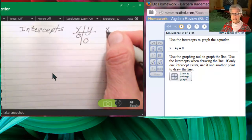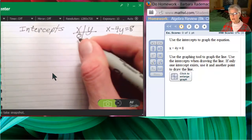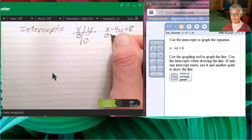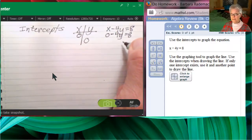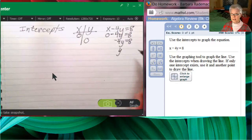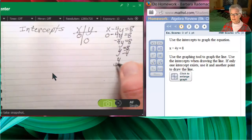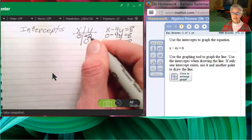That way, if x is 0, we find out what y is, and if y is 0, we find out what x is. So let's let x equals 0. All right, that will leave us with negative 4y equals 8. Divide both sides by negative 4, and we'll find out that y is negative 2. So if x is 0, then y is negative 2.